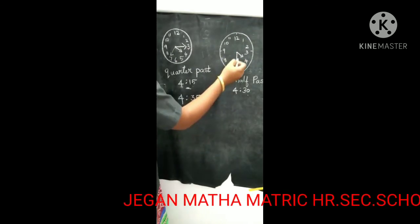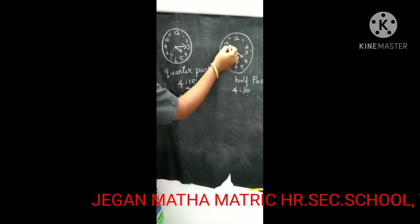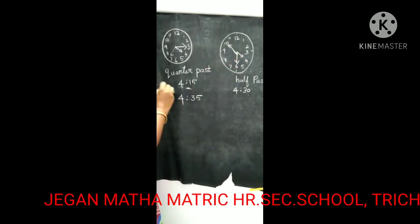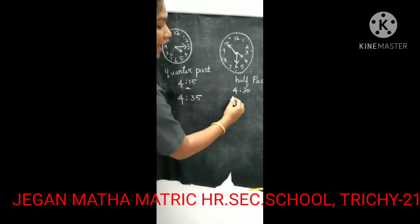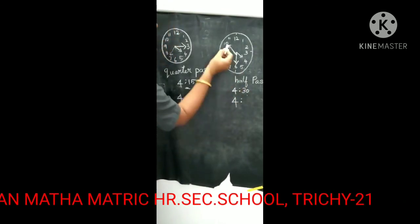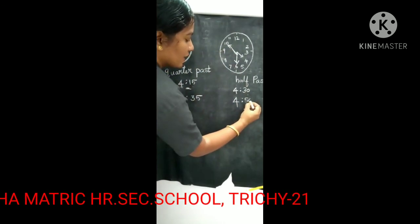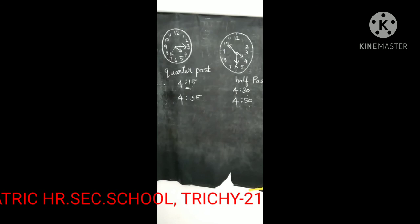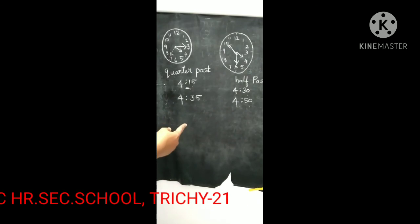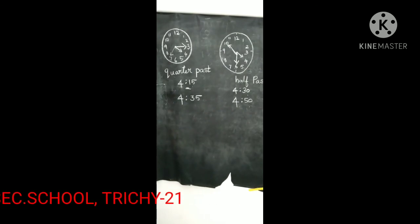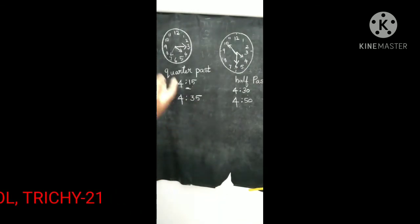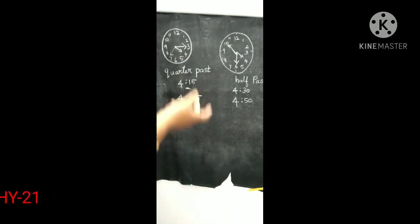So here, the minute hand goes to 10. Now the minute hand is on 10, so the time is written as 4 hours and 10 multiplied by 5 — 10 fives are 50. So 50 minutes — 4 hours and 50 minutes. That's all, children. I hope you all understood. Thank you children, thank you for listening.